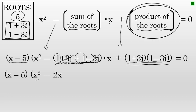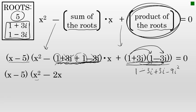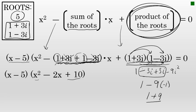Then comes the product of the roots. To find the product: 1 times 1 is 1; 1 times negative 3i is minus 3i; 3i times 1 is plus 3i; and positive 3i times negative 3i is negative 9i². The middle terms add up to zero, leaving 1 minus 9i². Since i² equals negative 1, this becomes 1 minus 9 times negative 1, which is 1 plus 9, which equals 10.